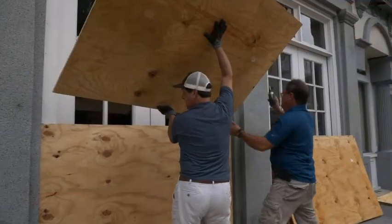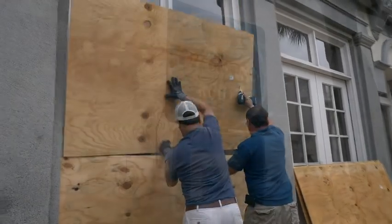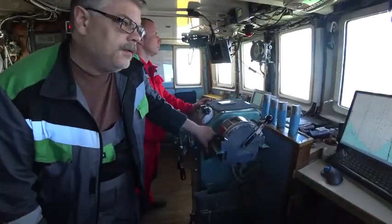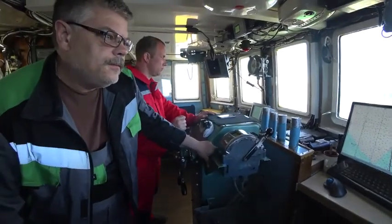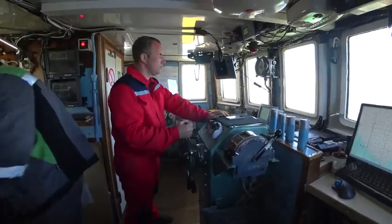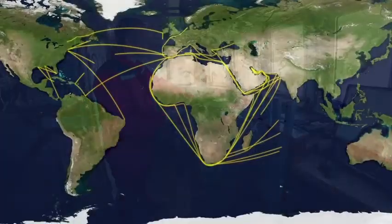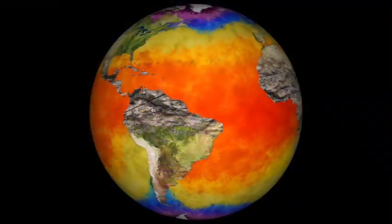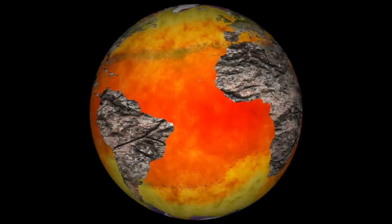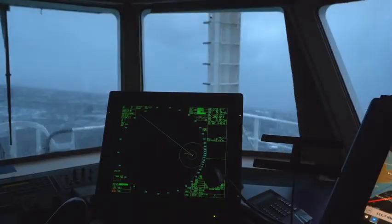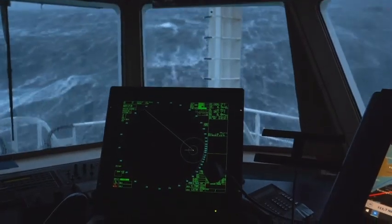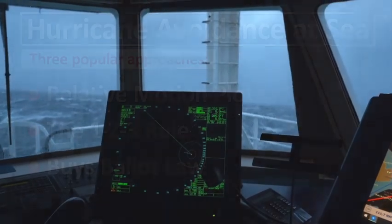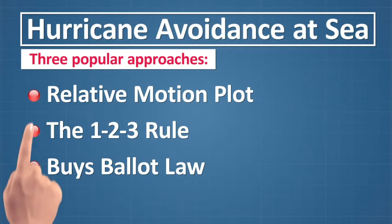The cardinal rule of hurricane avoidance is to get as far away as possible from the path of the storm. On land, this is simply a matter of timely evacuation as directed by local government officials. At sea, mariners need to monitor the weather and promptly maneuver their ship away from these dangerous storms. Considering that most shipping routes pass through tropical waters and climate change is evidently exacerbating global ocean warming, it's very likely that one day your ship will be in the vicinity of a hurricane. In this video, we'll explore three different methods for hurricane avoidance.